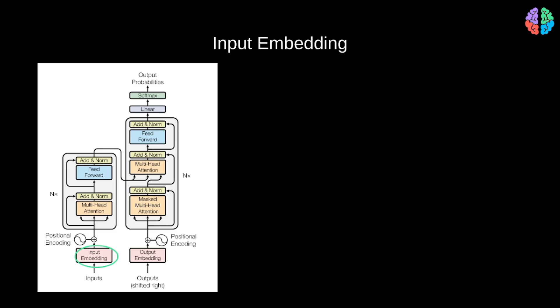Let's take the example of translation from English to French and let the inputs be: 'Hello, how are you?' and the French translation being 'Bonjour, comment allez-vous?' The input to the transformers is words which we have to transform to numbers. Even the best AI system in the world cannot yet understand words directly, so we have to convert them into numbers. But they are not just any numbers, but numbers that are sensible. So in order to do this, we do the below steps.